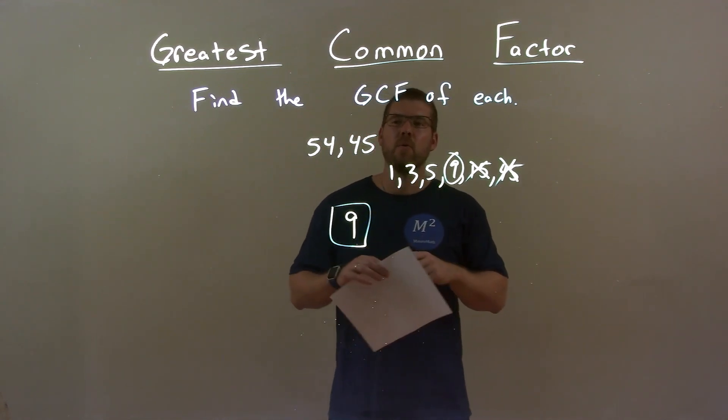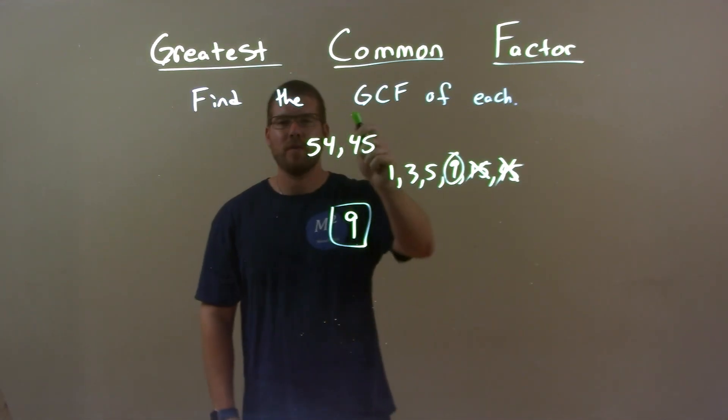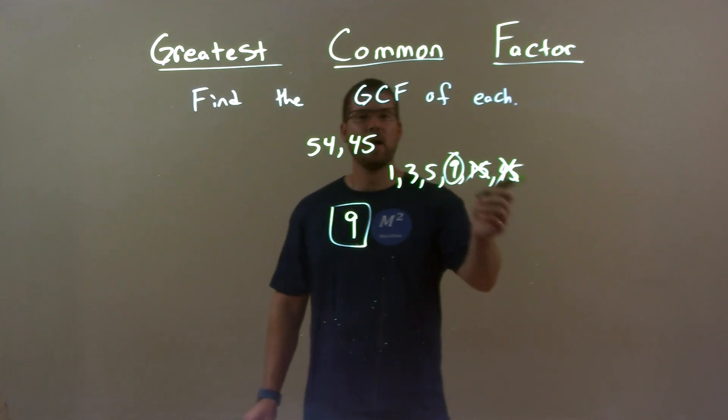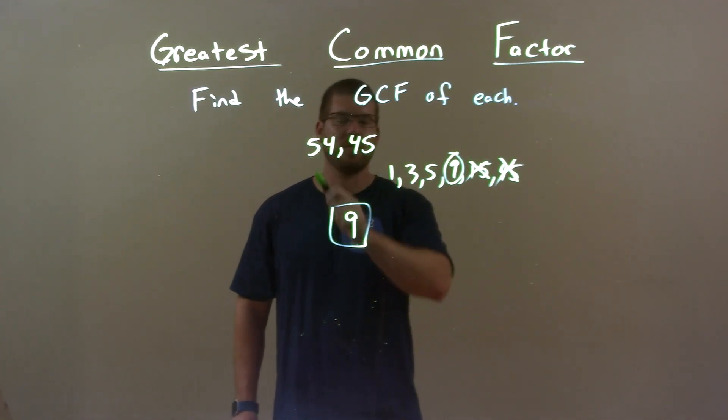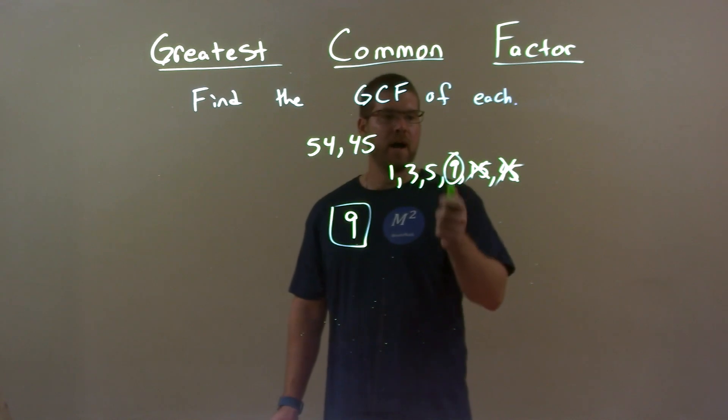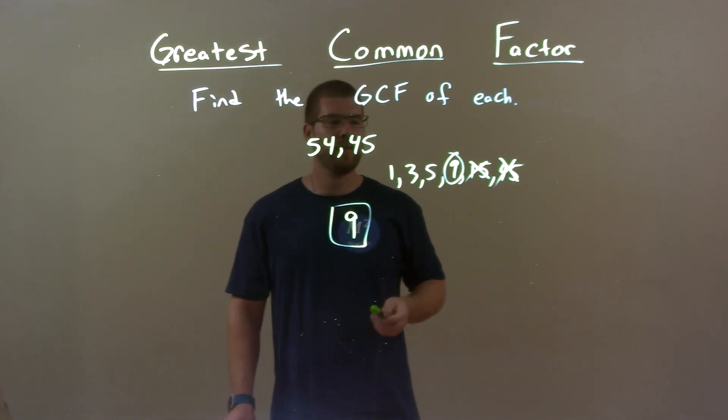So, quick recap. We're given 54 and 45, and we have to find the GCF of that. Well, I found all the factors of 45, the lesser of the two numbers, and worked my way down. 9 was the highest one that also went into 54, so the GCF here is 9.